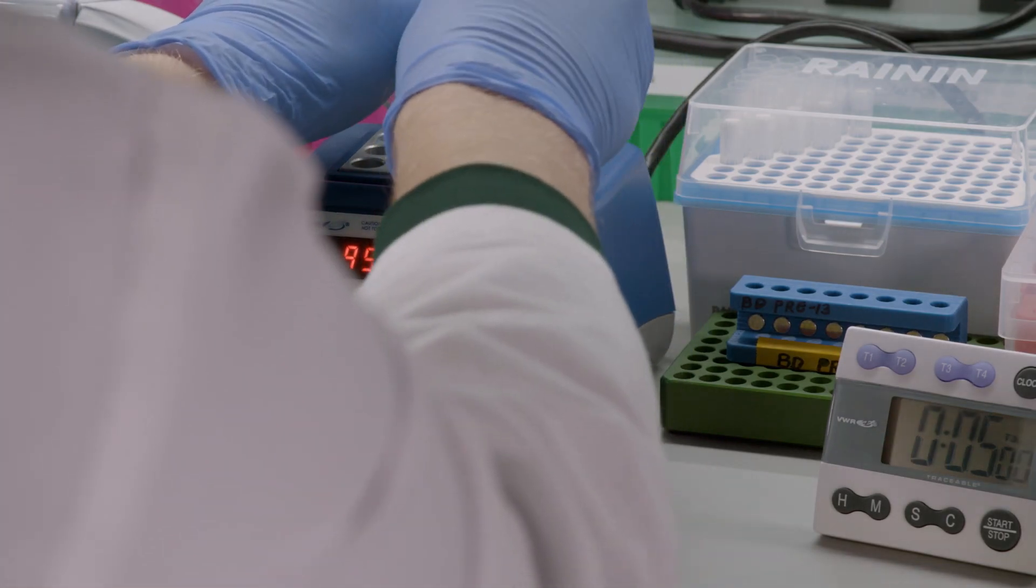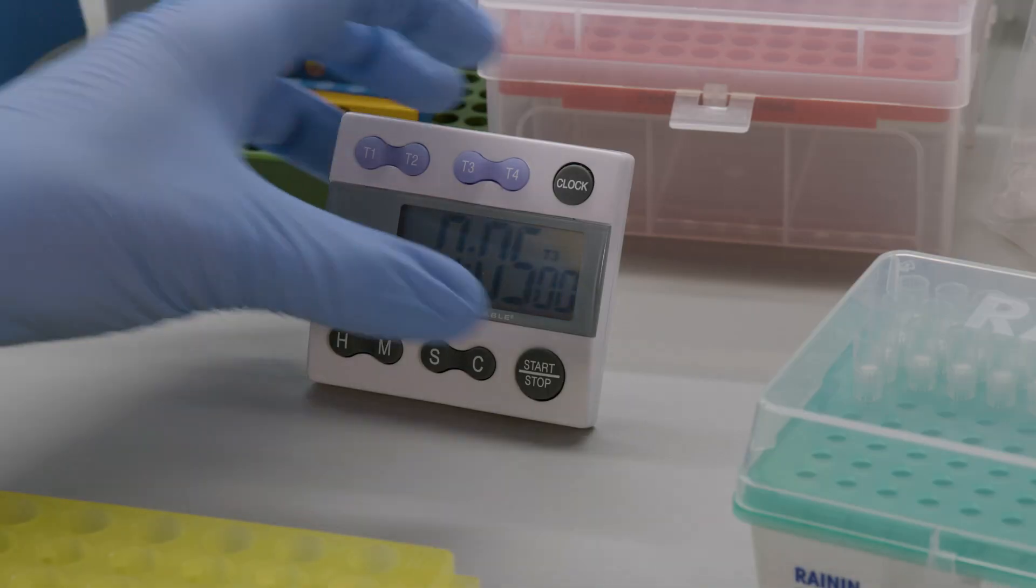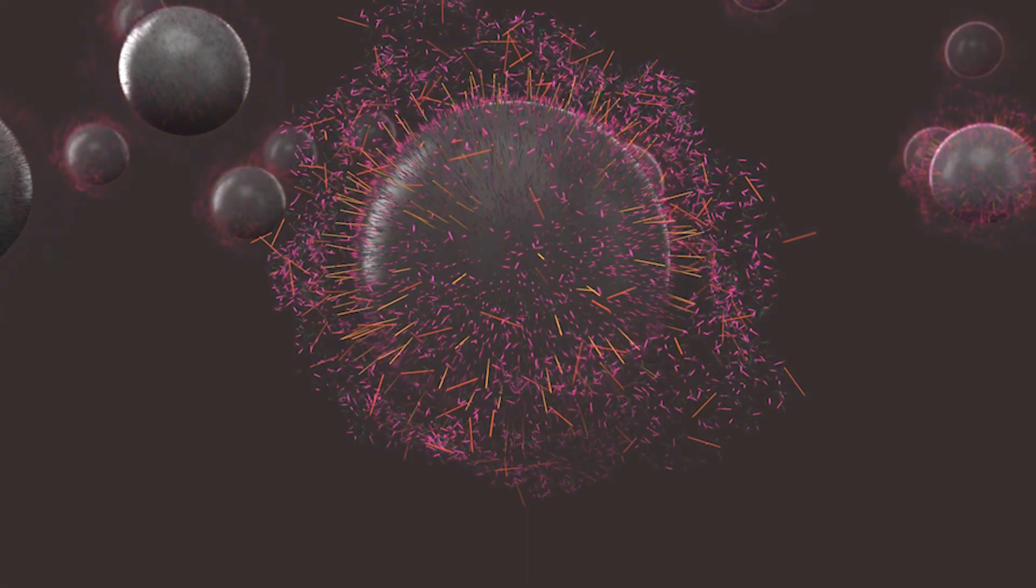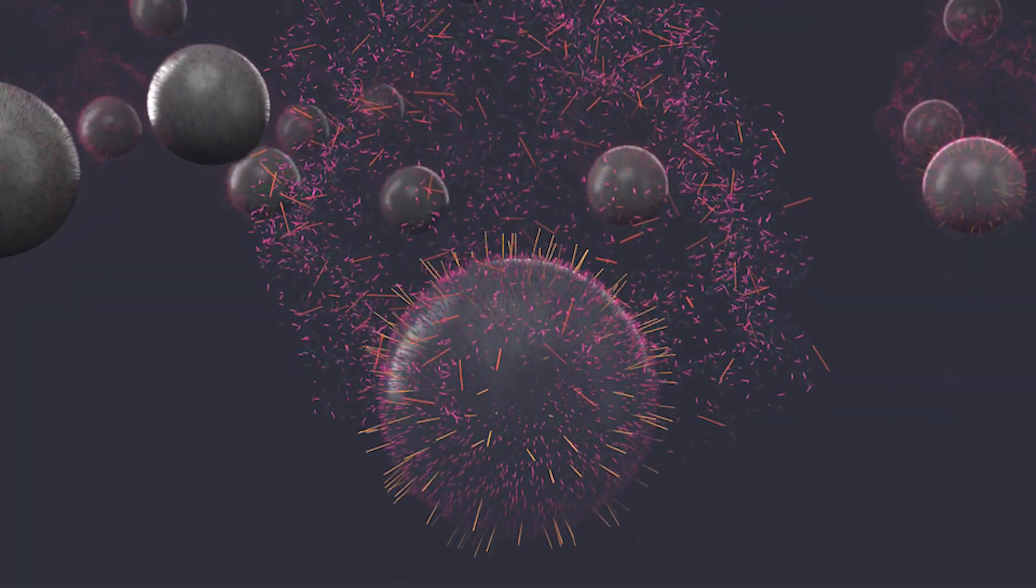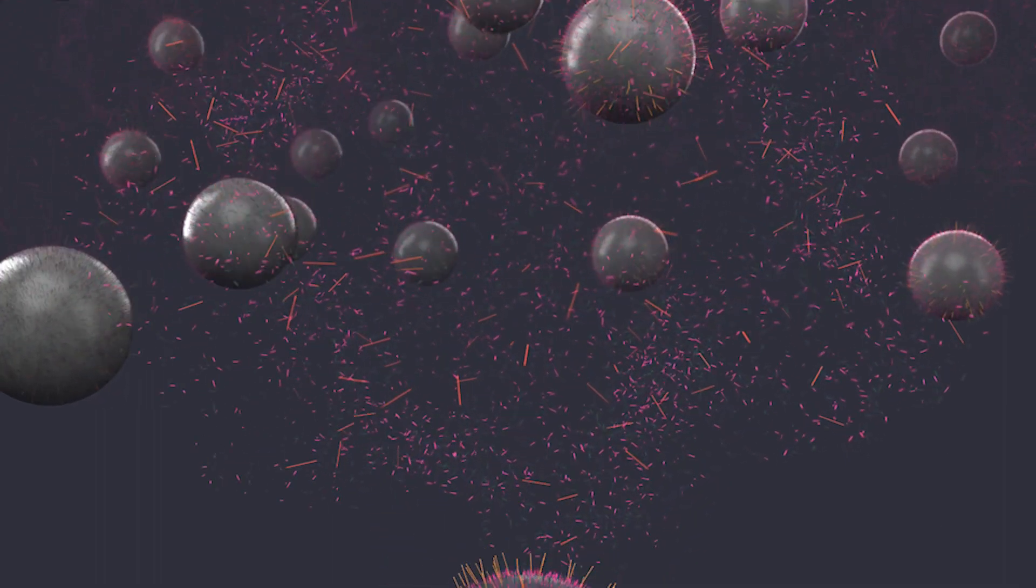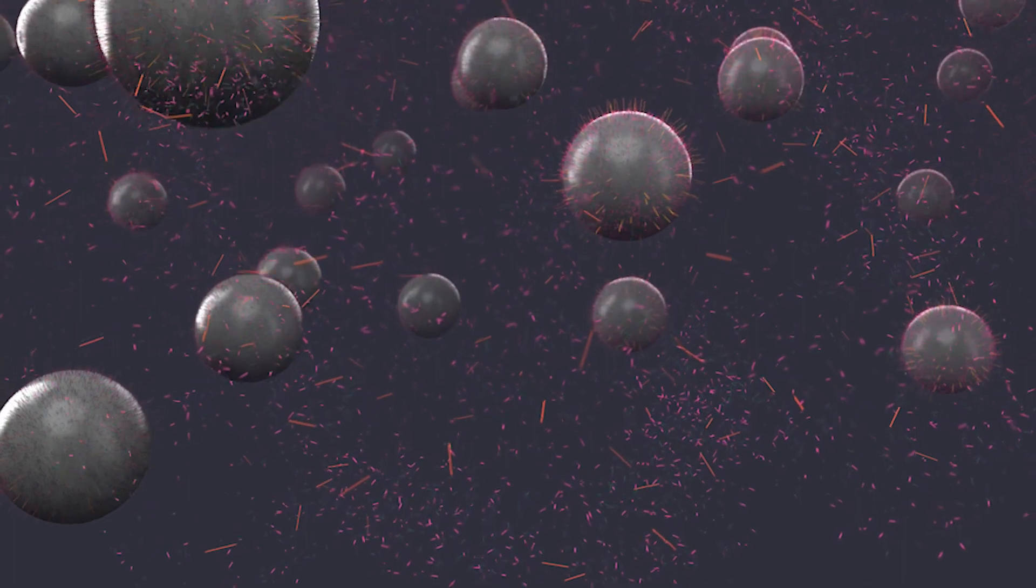Place the resuspended beads on a 95 degrees Celsius heat block and incubate for five minutes. This will denature the randomly primed and extended or RPE products from the beads while leaving the cDNA covalently bound to the beads. The beads will settle during this step and that is perfectly normal.